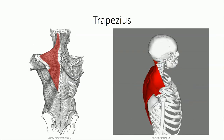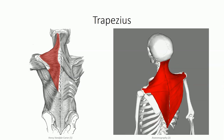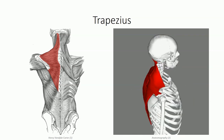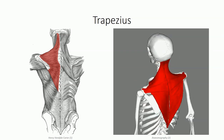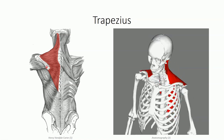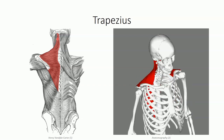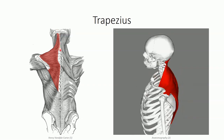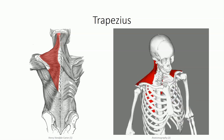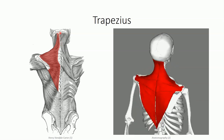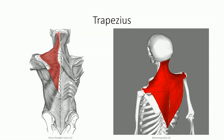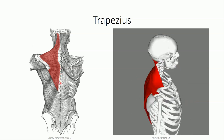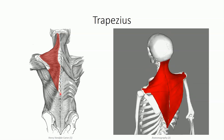We begin our discussion with the most superficial of the muscles of the back. This is the trapezius muscle, so named because of its trapezoidal shape. Trapezius has an extensive origin. Superiorly, it arises from the nuchal ligament, a continuation of the supraspinous ligament, and the external occipital protuberance and superior nuchal line. Inferiorly, trapezius continues to originate off the spinous processes as low as the 12th thoracic vertebrae.